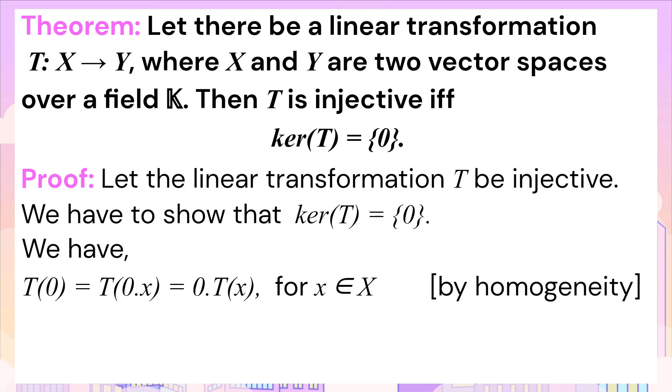It becomes 0·T(x), which will obviously be equal to zero. So T(0) is equal to zero. Another way to put it is that a linear transformation sends zero to zero. This implies that singleton zero is a subset of kernel of T.